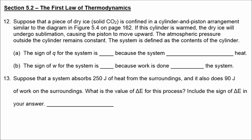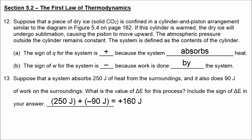If we have solid CO2 in a cylinder and piston arrangement similar to the diagram on page 162, warming that cylinder creates a positive Q because the system absorbs heat. If it pushes the piston upward, then W is negative because work is being done by the system on the surroundings. If we have absorbing heat of positive 250 joules but negative 90 joules because we're doing work on the surroundings, then positive 250 plus negative 90 gives us a delta E of positive 160.